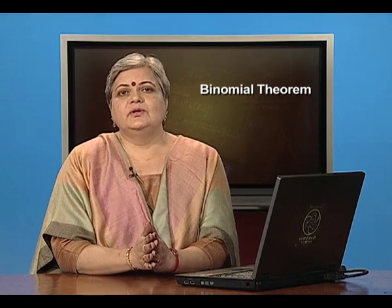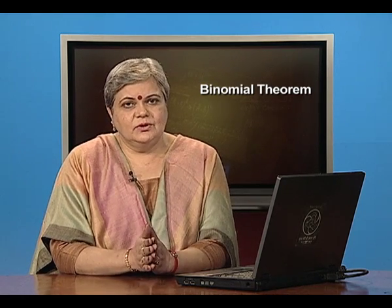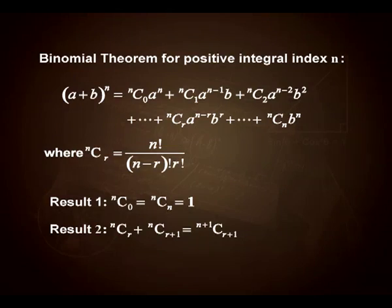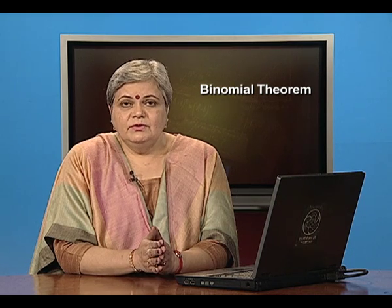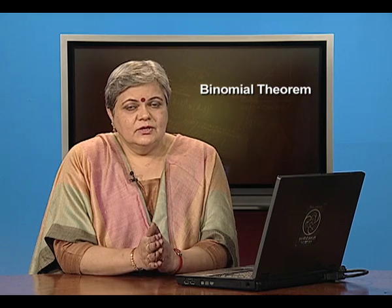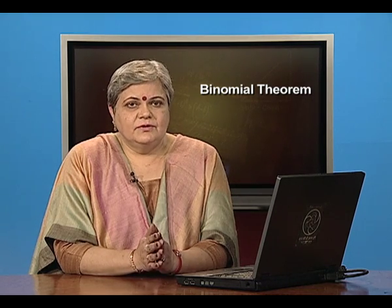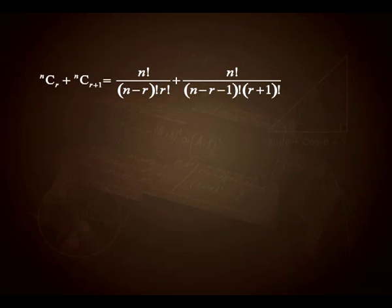It is the second result which will actually help build up the proof of this theorem. The second result says that nCr + nC(r+1), when added, gives (n+1)C(r+1). The proof of this is algebraic simplification. Starting with the left-hand side, nCr + nC(r+1), if I expand in terms of factorials I get n!/[(n−r)!·r!] + n!/[(n−r−1)!·(r+1)!].